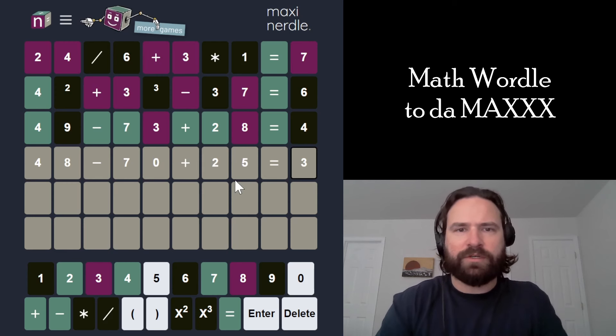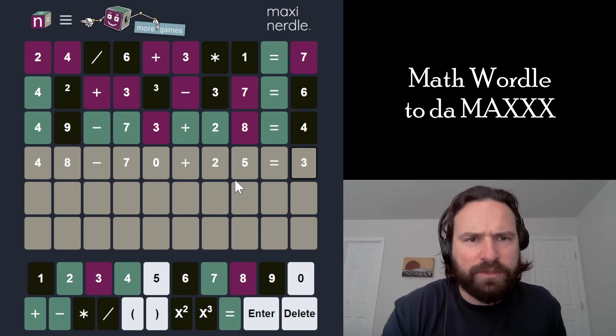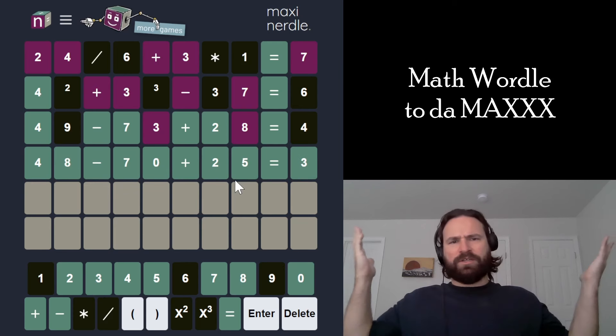So the two numbers that I haven't tried yet, I think this works. 48 plus 25 is 73. Yeah. There it is, dude. There's a maxi-nernal.